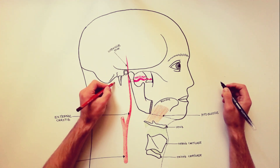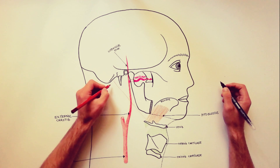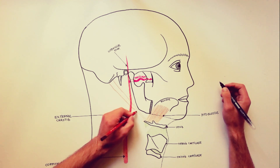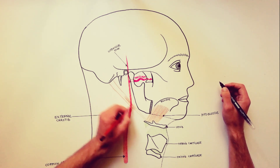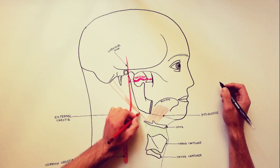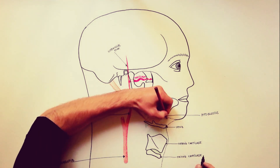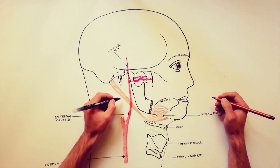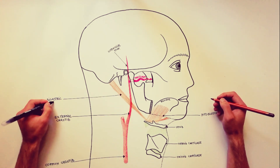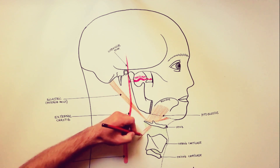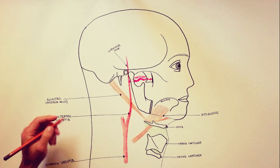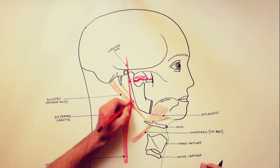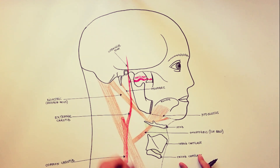Apart from these two terminal branches, the external carotid artery gives off six collateral branches as it travels upward. Five of these six collateral branches arise in the carotid triangle, which is bounded anteriorly by the posterior belly of the digastric and the superior belly of the omohyoid muscles. Very closely related to the posterior belly of the digastric, we can also note the stylohyoid muscle. Posteriorly, the carotid triangle is bounded by the anterior margin of the sternocleidomastoid.